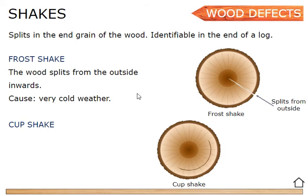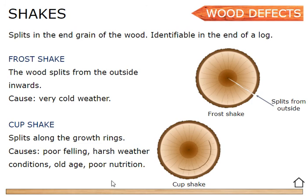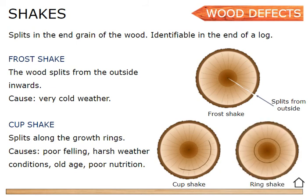The next one is a cup shake. It's called a cup shake because it's a C-shape — it kind of looks like a cup. It splits along the growth rings, also known as annual rings. It doesn't go around the full ring, just around part of it — maybe half or less. The cause could be poor felling (cutting the tree down wrong), harsh weather conditions, old age, or poor nutrition. The ring shake is the same thing as a cup shake, only it goes the full way around the annual ring, making a complete circle.